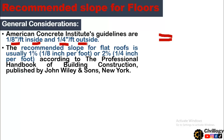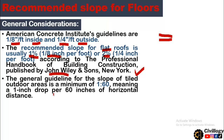Another reference is the Professional Handbook of Building Construction published by John Wiley and Sons, New York. It states that the recommended slope for a flat roof is usually 1%, which equals 1/8 inch per foot, or 2%, which equals 1/4 inch per foot. The general guideline for the slope of tiled outdoor areas from this handbook is a minimum of 1:60.